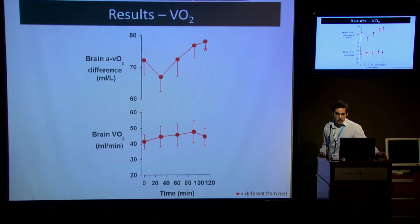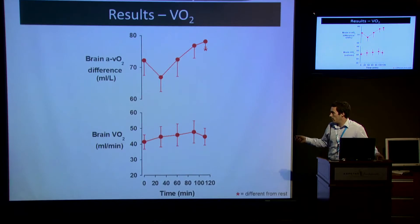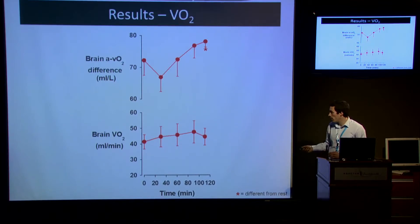What did this mean for our brain VO2 or our CMRO2? Well, Jose mentioned earlier, and it's already mentioned in the last presentation as well, that sufficient brain AVO2 difference reserve can increase and therefore compensate for reductions in cerebral blood flow. This resulted in a maintained or stable brain VO2 during exercise.